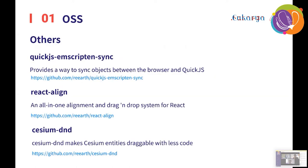We are also developing several other packages in the process of developing Reels. The first is QuickJS-M-Script, which enables object exchange between the browser and QuickJS. Next is React Align, a component alignment design system with drag and drop in React. And Cesium DND enables drag and drop of entities in Cesium. Through OSS development we are committed to sharing our technologies with people all over the world and promoting development with our contributors.